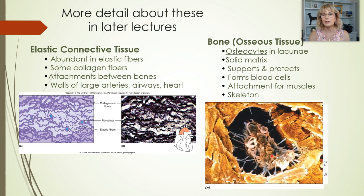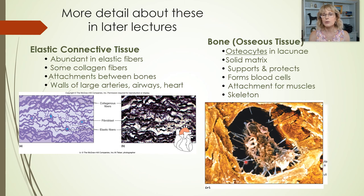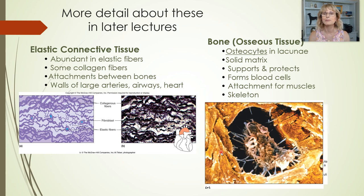Here is an osteocyte — this is a little cell. You see these little skinny arms coming off of it? Those are individual projections coming off this cell so that it can reach through the hard calcium part of bone in order to touch its neighboring cells very far away.